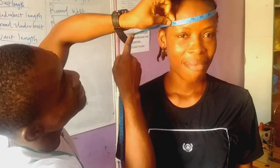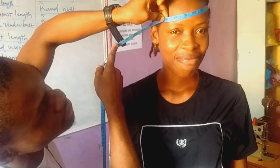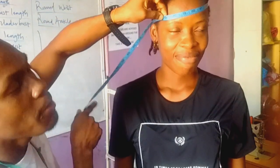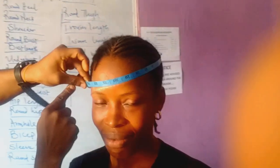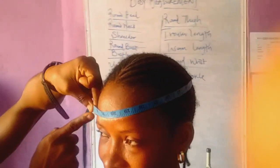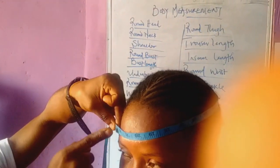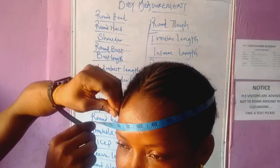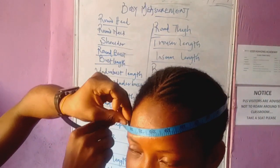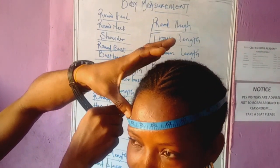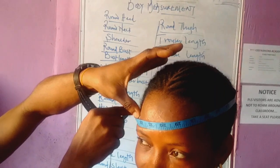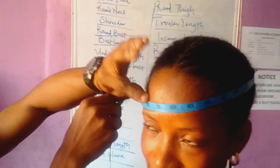Her round head is 23 inches. If you want to give a little spacing, all you have to do is put a finger in between the tape. With the finger, we have 23, but without the finger it should be 22 and a half — yes, 22 and a half. That is for round head.